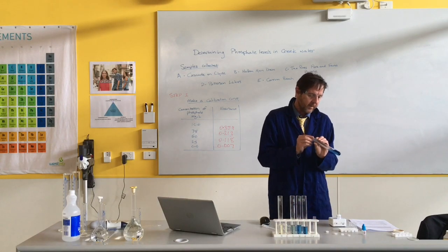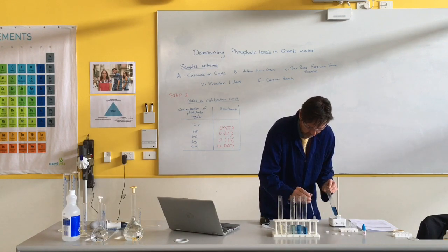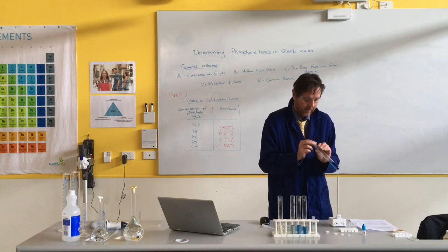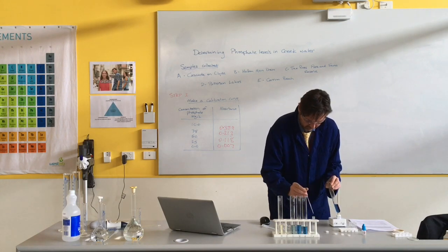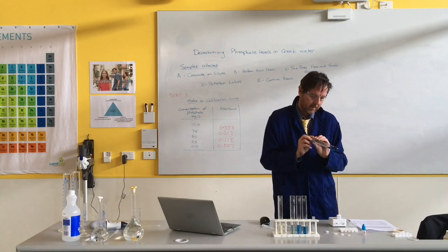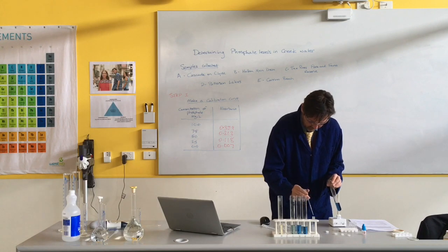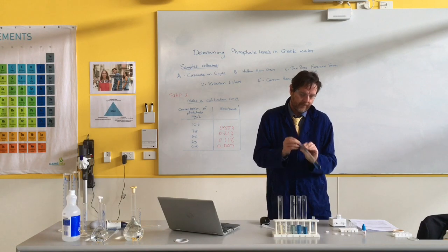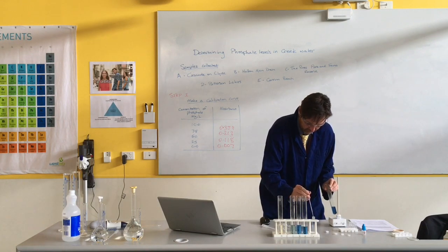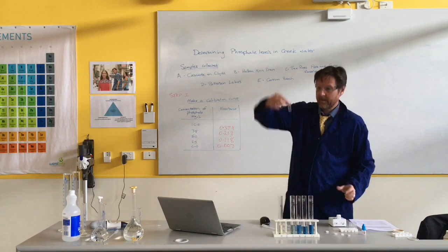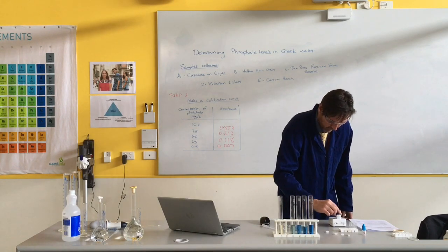10 milligrams per litre. Should be the darkest of the blues. Should be the biggest number we get in the absorbance. One more squirt. And put that in there. So that hopefully is the darkest of the blues. Let's see what we get.